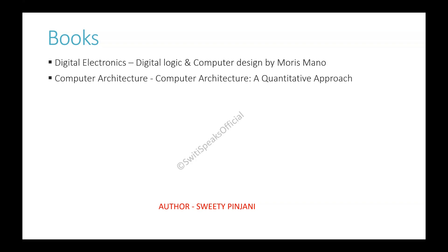The second book is on computer architecture. Again, there are a lot of books but I refer this one — Computer Architecture: A Quantitative Approach. This book talks about a lot of computer architecture concepts like cache memories, RAM, ROM memories, and pipelining concepts. It again has a lot of numericals which you can solve. When we solve these numericals, we actually get an understanding of how computer architecture works. Numericals are really my favorite.